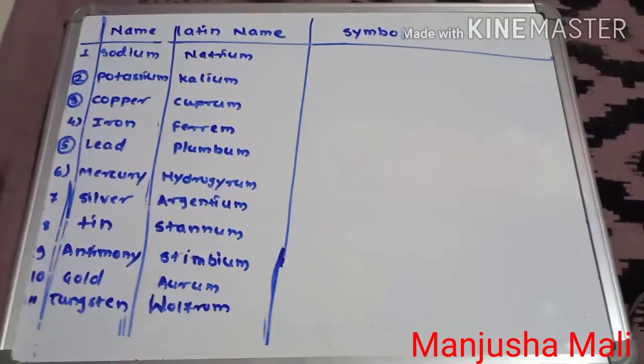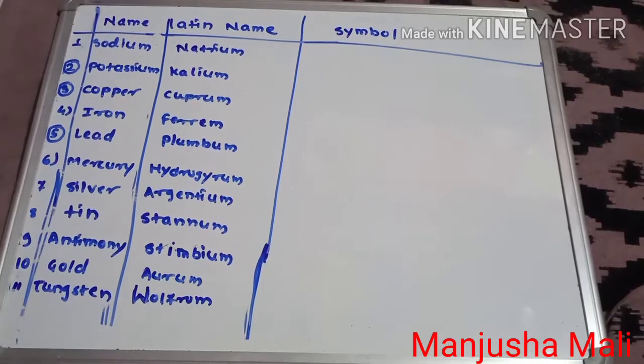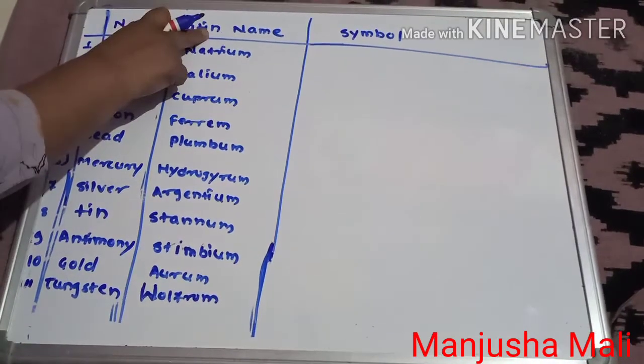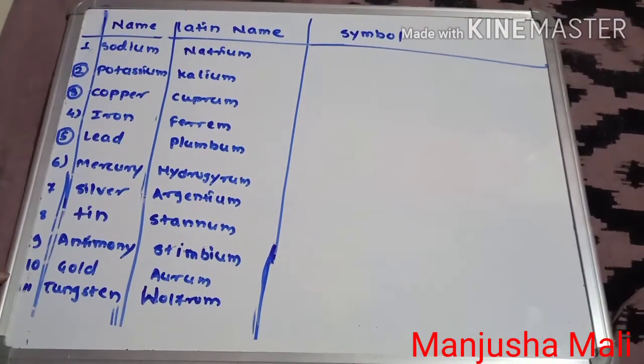Students, in this lecture, now we are going to discuss about those symbols which are based on their Latin name and these are the most confusing ones and that's why you have to learn with certain tricks.